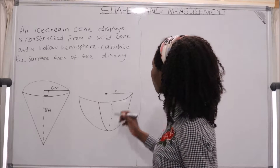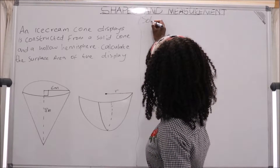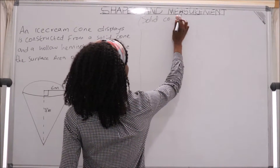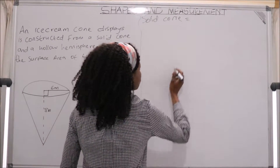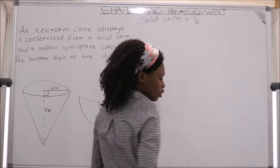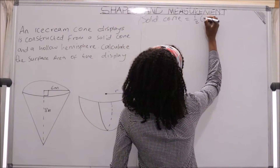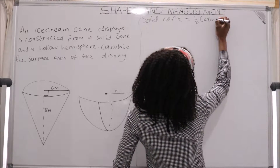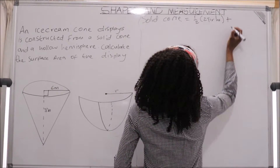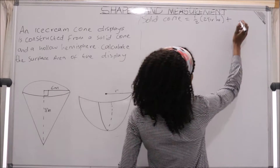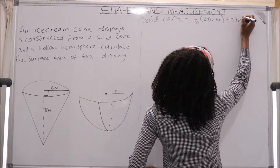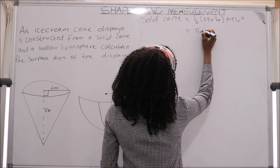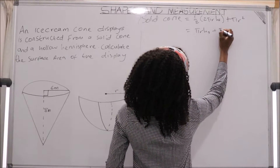Remember when we talk about the solid cone, the equation of a solid cone is equal to half the circumference of the circle — which is half of 2πr — multiplied by the slant height hs. Because it's a solid cone we also add πr². This gives us πr·hs + πr².